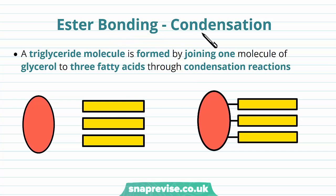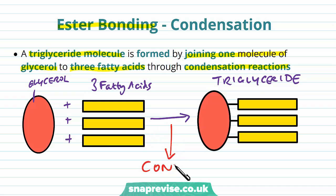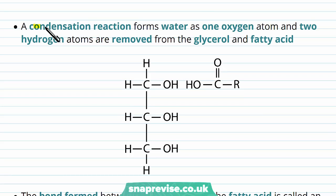Looking at the molecule in more detail, we need to talk about the ester bond. The triglyceride molecule is formed when we join one molecule of glycerol to those three fatty acids through condensation reactions. Condensation is seen in lots of reactions in the body where we're joining things together. In a condensation reaction it forms water — like condensation on the side of a glass bottle or on a mirror, where water droplets begin to form. The reaction forms water because one oxygen atom and two hydrogen atoms get removed from the glycerol and fatty acid.